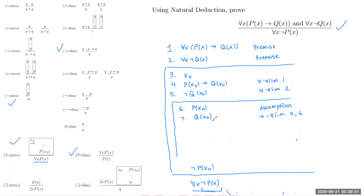Now we have Q(x₀) on line 7 and the only line we haven't used is line 5: not Q(x₀). Looking at the ¬-elim rule: Q(x₀) and not Q(x₀) together imply false. So on line 8, by ¬-elim on lines 5 and 7, we arrive at false.